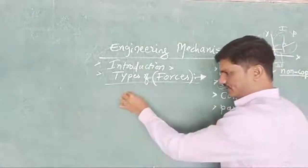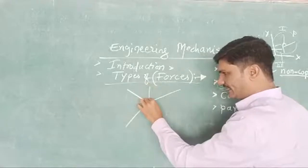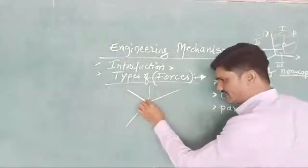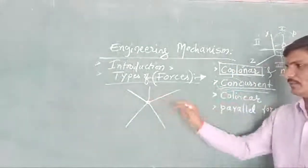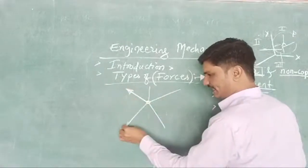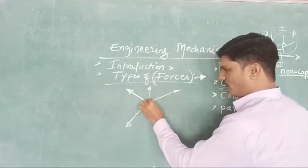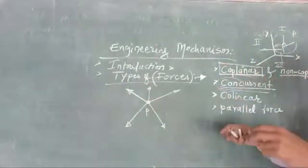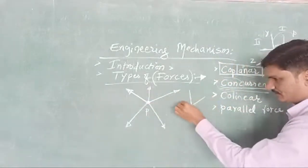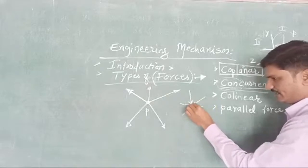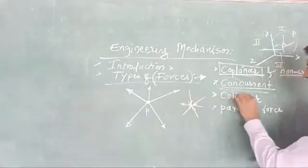Concurrent forces: the number of forces are meeting at one point. So this is the point where all the forces are originating, or they are meeting at one point. It may be any nature — maybe tensile or it may be compression. So at this point, all the forces are meeting or excluded from this point, or they are meeting to this point. They are meeting at this point — we call these concurrent forces.